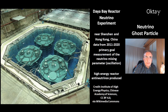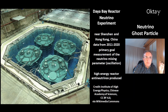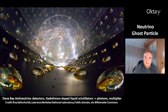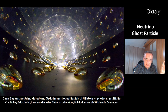There is another experiment — the Daya Bay reactor neutrino experiment, located near Shenzhen and Hong Kong in China. It took data from 2011 to 2020. Its primary goal was measurement of the neutrino mixing parameter, which describes the oscillation of neutrinos between the three flavors. This reactor is able to produce high-energy anti-neutrinos. The detectors use gadolinium-doped liquid scintillators, and you make use of the fact that you can measure the secondary particles — in this case, photons — using multipliers to detect photons from the decay of the neutrino.